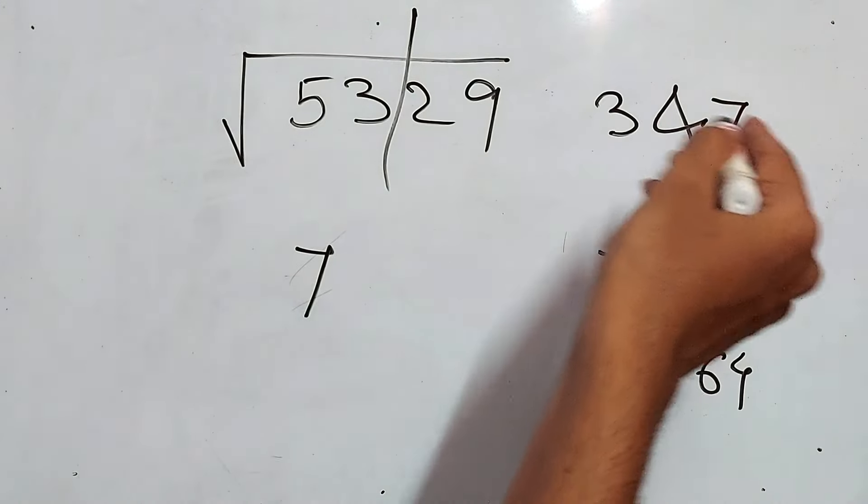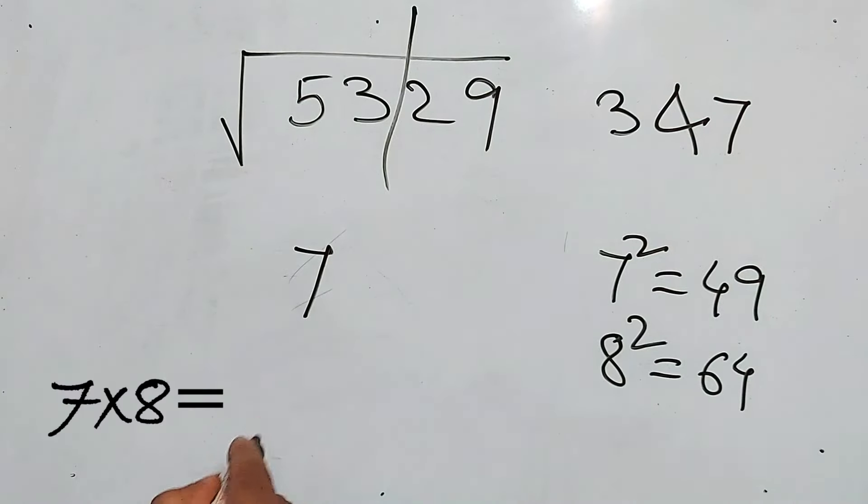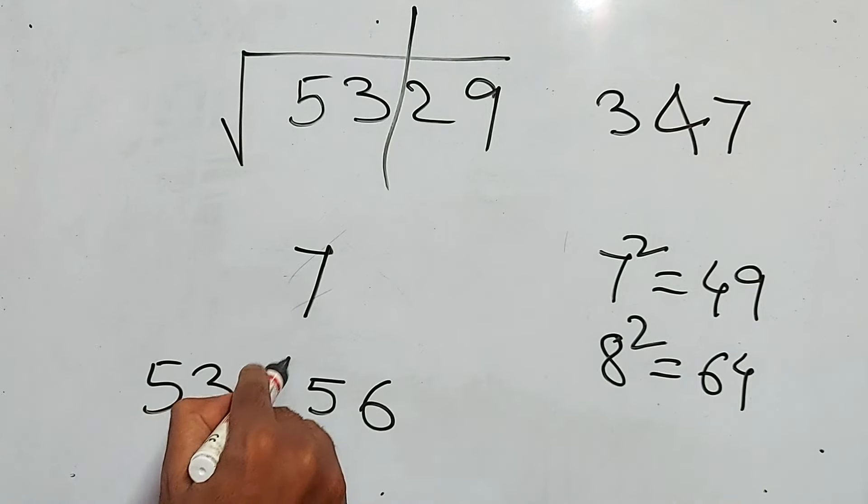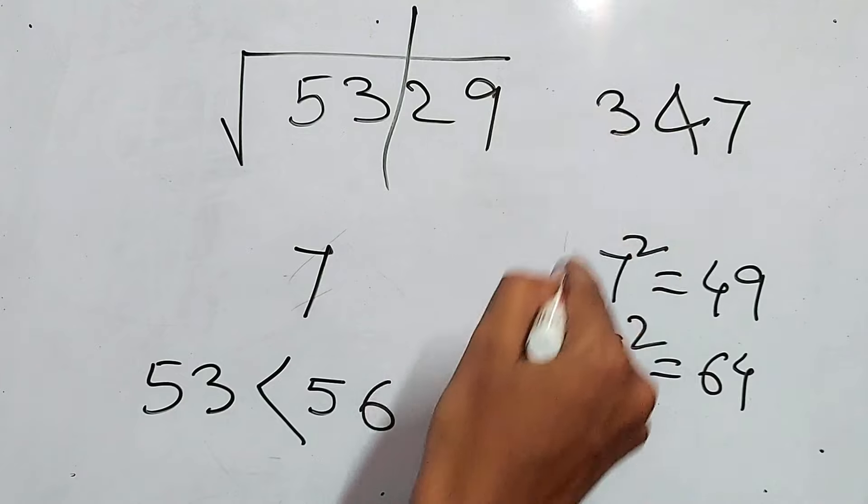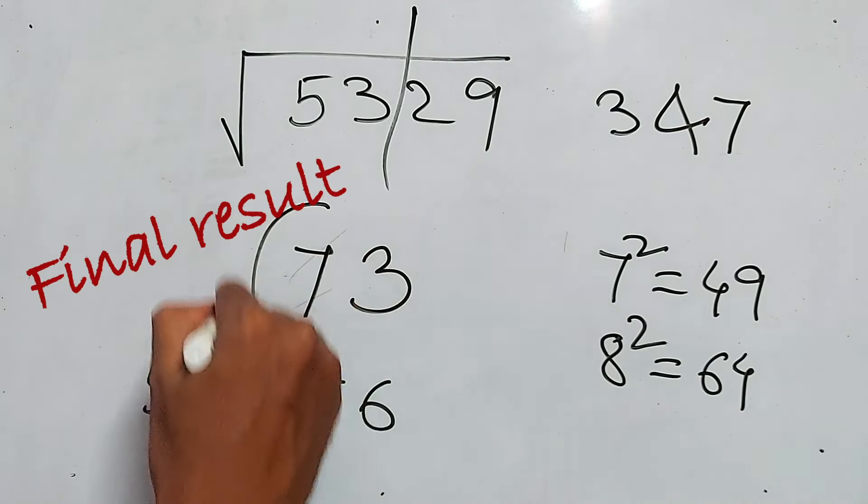Now, again, we don't know which one to take from these two. If we multiply this 7 with the next number, that is 8. 7 × 8 is 56. But this time 53 is less than 56. So we have to take the smallest number, that is 3. So 73 is my answer.